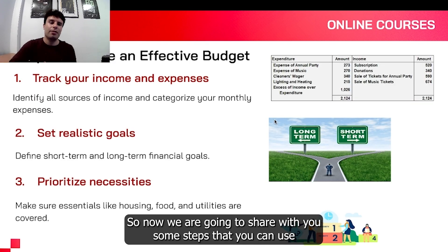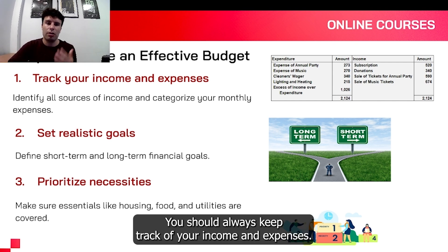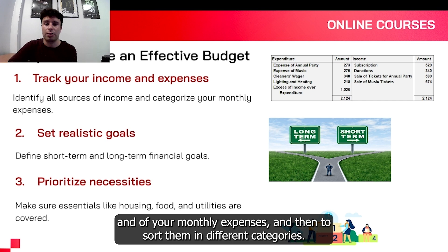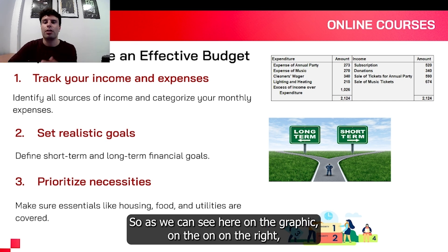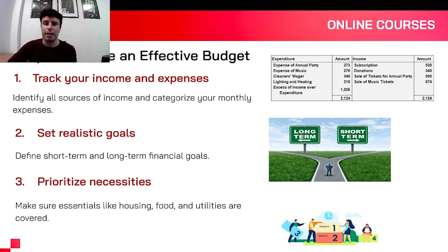So now we are going to share with you some steps that you can use to create an effective budget. First of all, you should always keep track of your income and expenses. You should list all of your different kinds of income streams and monthly expenses, and then sort them into different categories. As we can see here on the graphic on the right, this gives you a very clear overview of all your expenses and income.